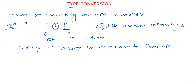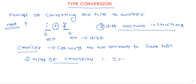In type conversion, we have two types of conversions. One is where integer is converted into float to make both similar, and another is where float is converted into integer. These two types are called implicit conversion and explicit conversion.